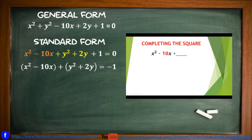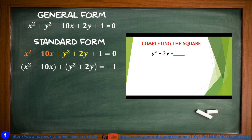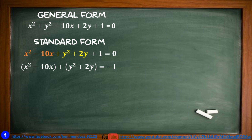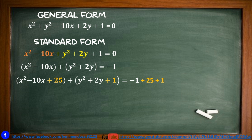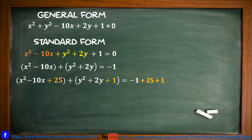Apply completing the square. For x squared minus 10x: half of 10 is 5, and 5 squared is 25, so we add 25. For y squared plus 2y: half of 2 is 1, and 1 squared is 1, so we add 1. On the right side, add 25 and 1 as well. This gives x squared minus 10x plus 25 plus y squared plus 2y plus 1 equals negative 1 plus 25 plus 1.